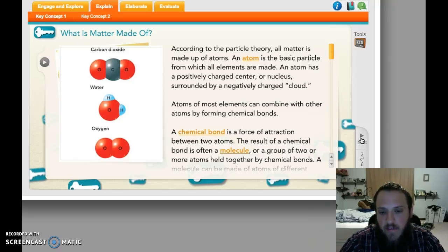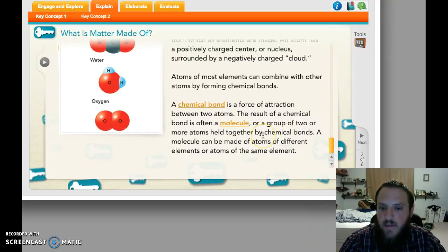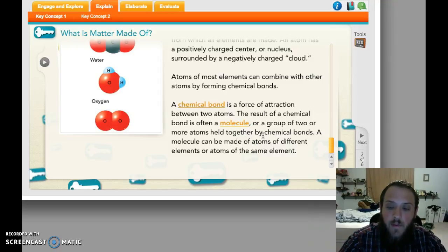They chemically bond. They have a chemical bond, which is a forceful attraction between two atoms. The result of a chemical bond is something called a molecule. A molecule is two or more atoms held together by chemical bonds.